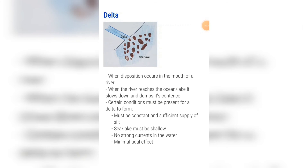The last landform is a delta. When deposition occurs at the mouth of a river, a delta is formed. When the river reaches the ocean or lake it slows down and dumps all its contents, as it no longer has energy to carry them. For a delta to form, there must be a sufficient and constant supply of sediment, the sea or lake should be shallow, and there should be no strong currents and a minimal tidal effect.